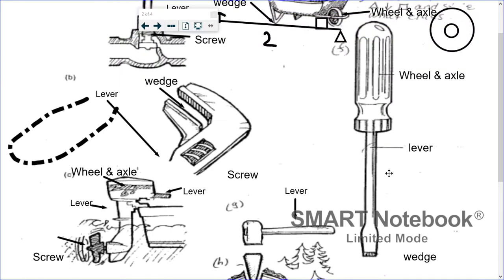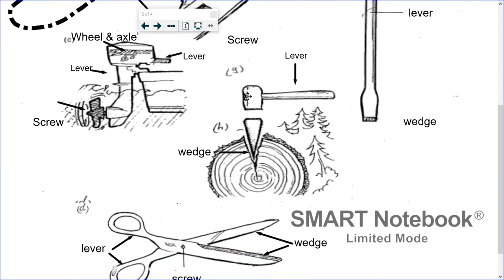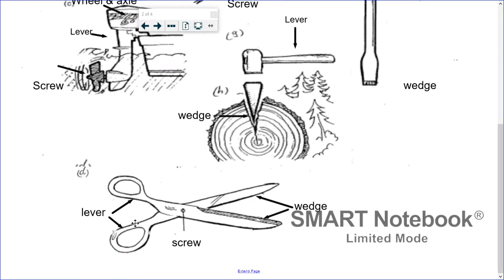A screwdriver: the whole thing is a lever; the bottom is a wedge. Looking straight down, you can see a bigger circle on the outside and a smaller circle inside — you're turning the bigger circle to turn the smaller one, which is a wheel and axle. An axe is a lever across its length, and the part that digs into the wood is a wedge. A pair of scissors: each bar is a lever, held together by a screw, and each cutting edge is a wedge.